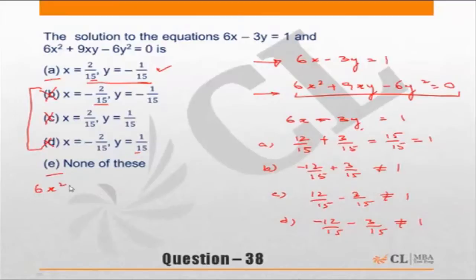The second equation is 6x square plus 9xy minus 6y square equal to 0. Let us put x equal to 2 by 15 and y minus 1 by 15 and check. 2 by 15 squared is 4 by 225. So 6 into 4 is 24.